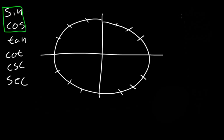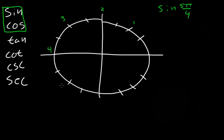Let's start with a simple sine problem: sine of 5π over 4. As you remember, we count around the circle — so this is 1π/4, 2π/4, 3π/4, 4π/4, and 5π/4.